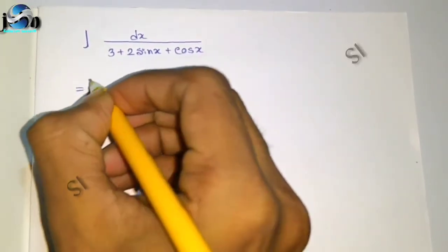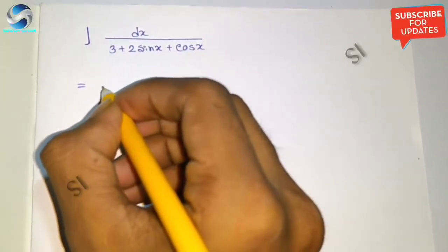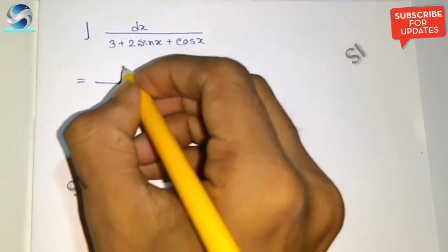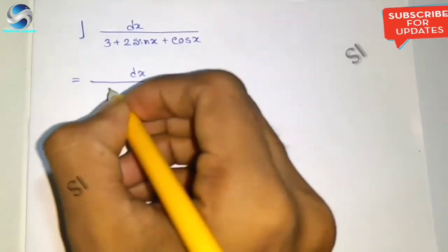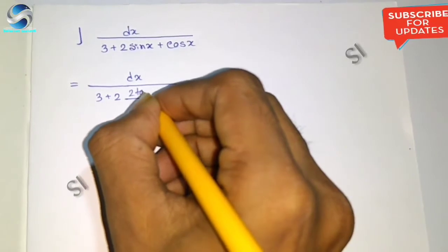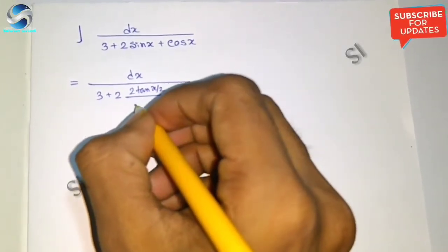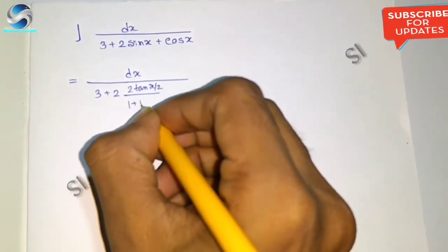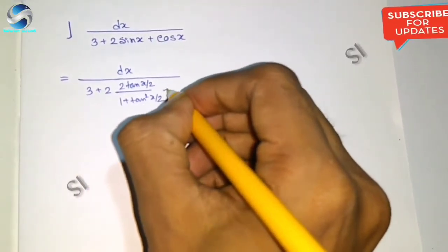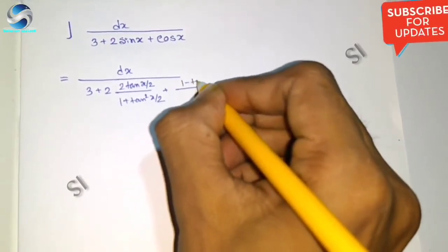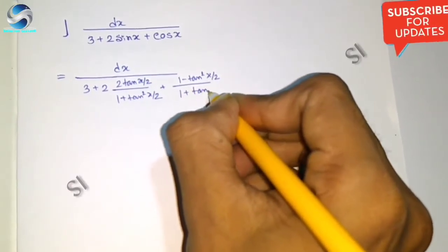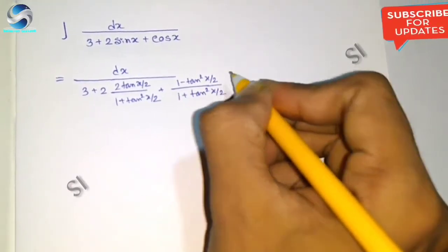Here is the first problem: integration dx divided by 3 plus 2 sin x plus cos x. We can rewrite this as dx divided by 3 plus 2 times 2 tan(x/2) divided by 1 plus tan²(x/2), plus 1 minus tan²(x/2) divided by 1 plus tan²(x/2).